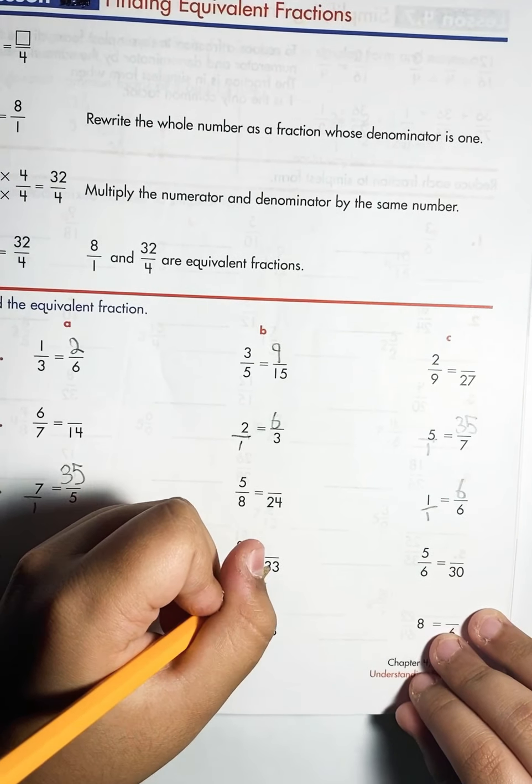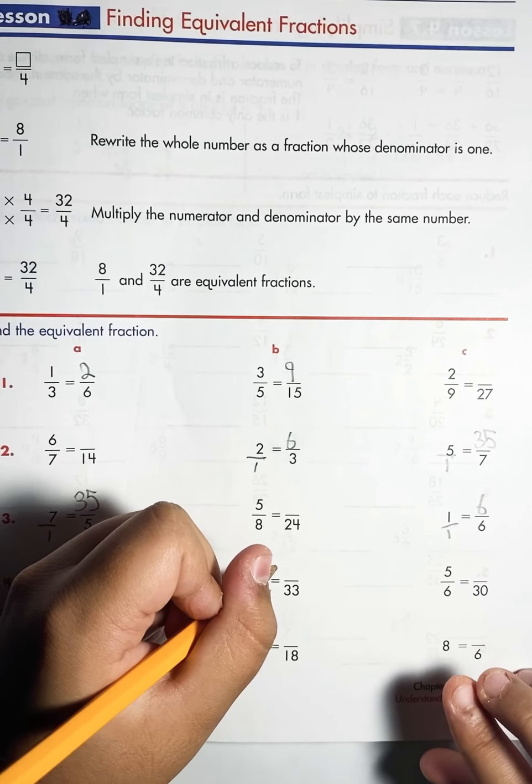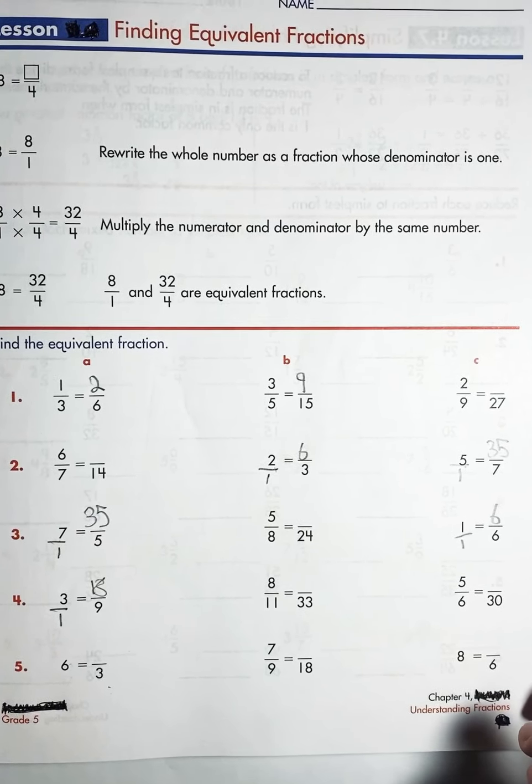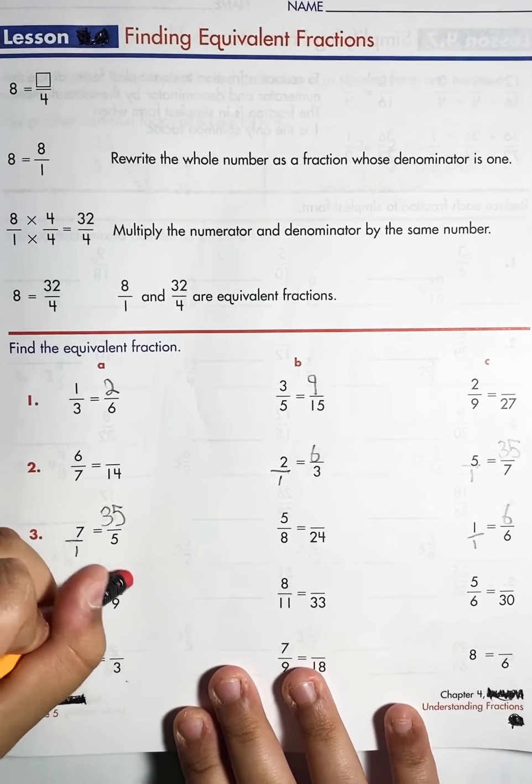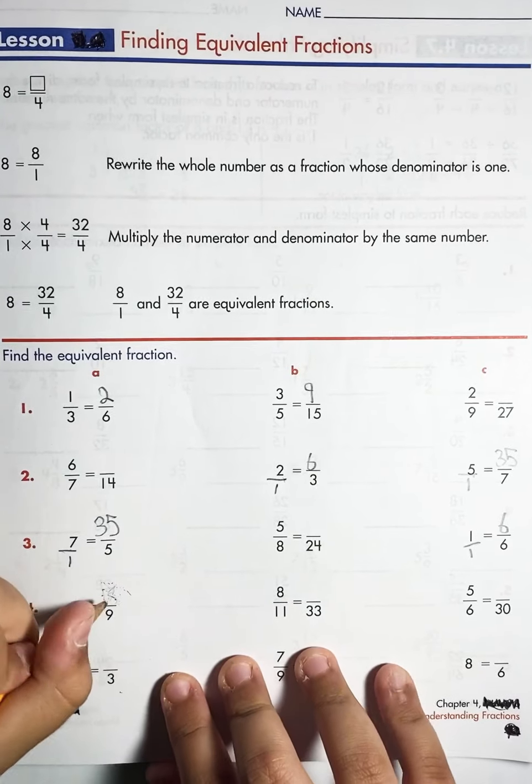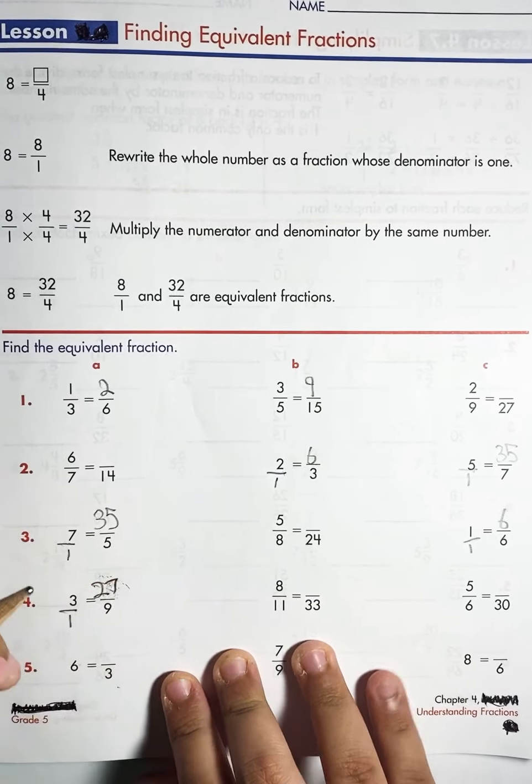Now let's do this one. Eleven to three is three times, eight times three. Oh sorry I made a mistake here. It's three times nine equals twenty-seven. My bad.